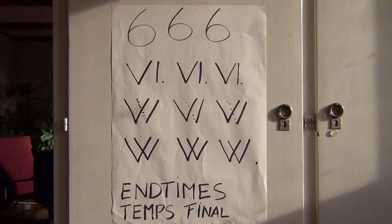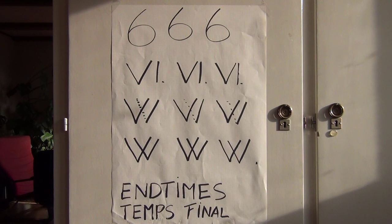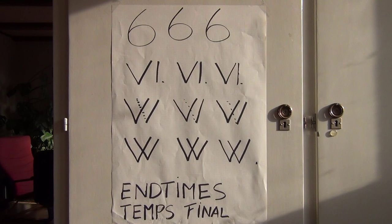In the book of Revelations, John talks about 666, the mark of the beast. But these Arab figures were first introduced after the Arab conquest in the 17th century AC. So in John's times, Roman figures were used.